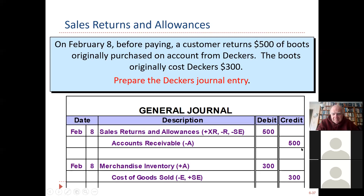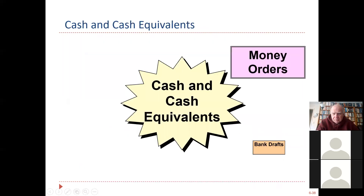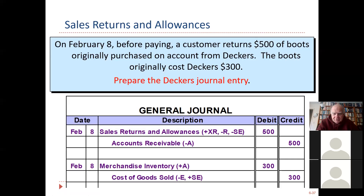Look at the other half of this: when we originally sold those boots, we debited cost of goods sold for $300 and credited merchandise inventory. Now the shoes are coming back — the customer hasn't even opened the box yet, it's good inventory. So we're going to put it back in our inventory and credit cost of goods sold. So we've looked at credit card sales, sales discounts and allowances, and sales returns and allowances.